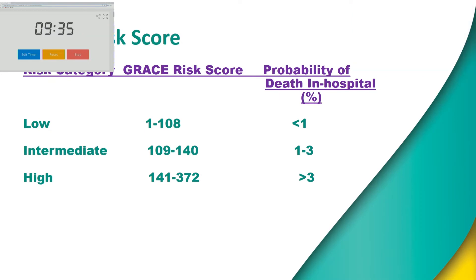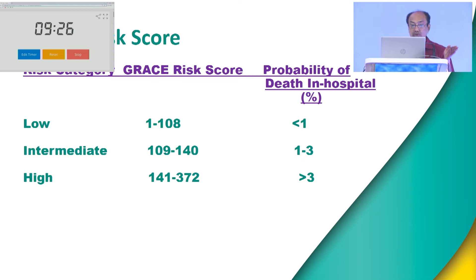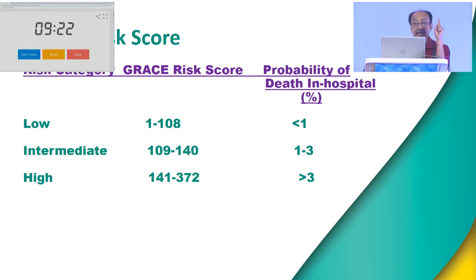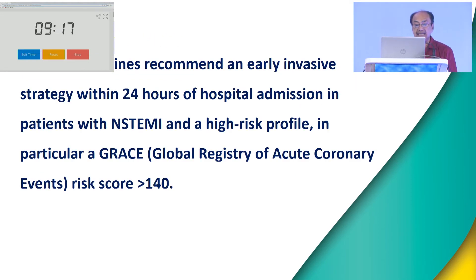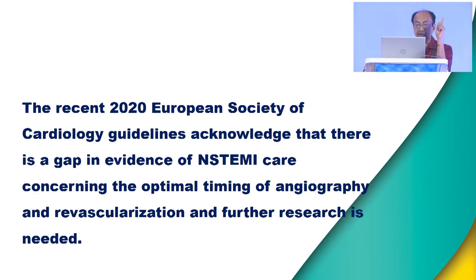How do we know which patients are high risk? The GRACE score. Before 2010, most trials used the TIMI risk score, but nowadays the GRACE scoring system is important. A score of 140 is the grey zone. If the GRACE score is more than 140, the patient is a high-risk population. Current guidelines recommend an early invasive strategy within 24 hours of hospital admission in patients with NSTEMI if the GRACE score is more than 140.